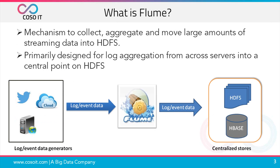So what is Flume? Flume is a data ingestion tool in the Hadoop world. Flume basically collects, aggregates, and moves large amounts of streaming data into centralized data stores such as HDFS. It is primarily used for log aggregation from various sources and then finally pushed to HDFS. For example, Amazon wants to analyze customer behavior from a particular region. It has huge amounts of log data generated from user activity on the Amazon website, coming from various sources like Facebook and Twitter. To capture this type of data generating in real-time, Flume is an appropriate tool.